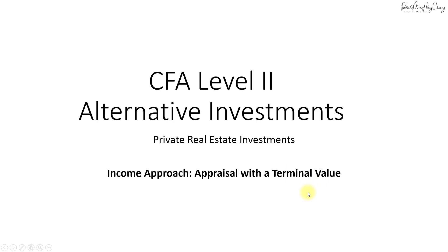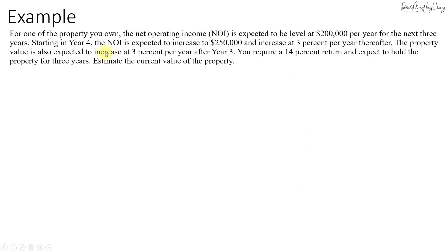In other words, you will have a case where for the first few years you have a fixed rental, and after that the rental will increase after a certain year with a constant growth rate. For example, for one of the property you own, the net operating income is expected to be level at $200,000 per year for the next three years. Starting in year four, the NOI is expected to increase to $250,000.